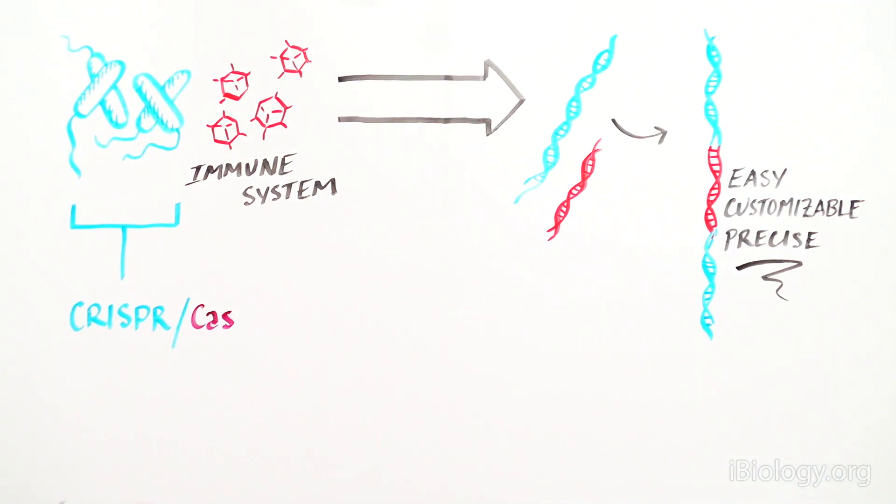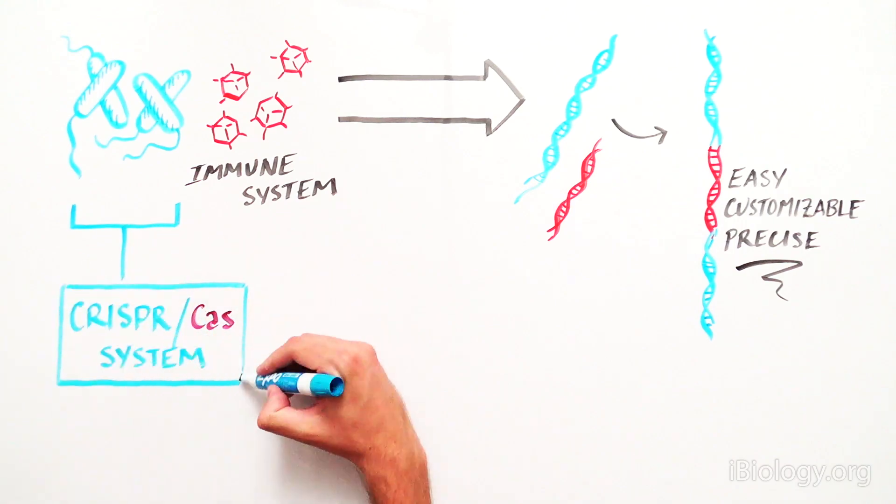Bacteria evolved ingenious ways of protecting themselves against pathogens, such as viruses, by using a system called CRISPR-Cas.